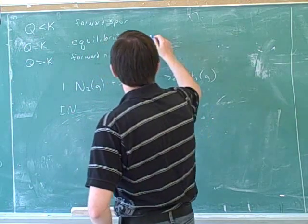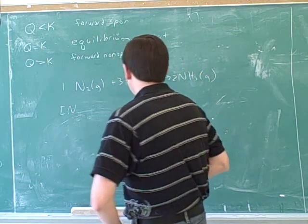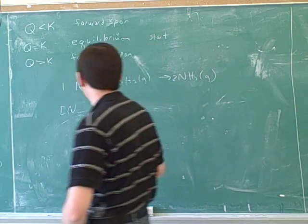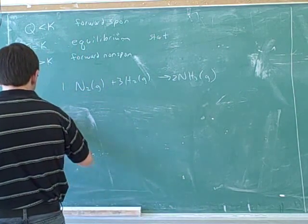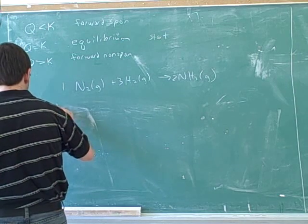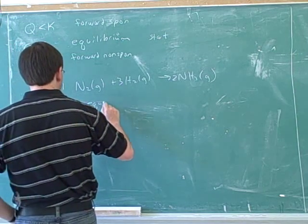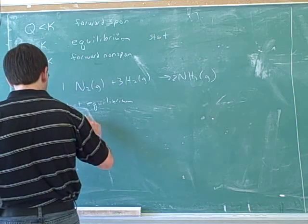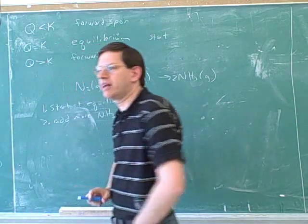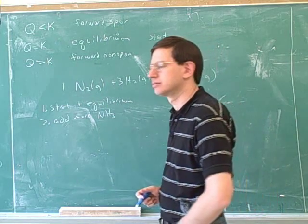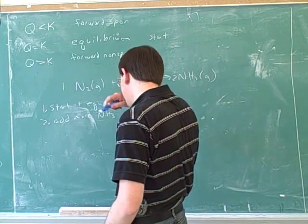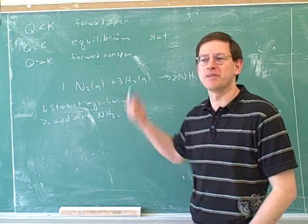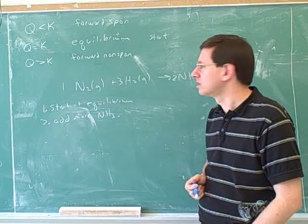So let's say that we start at equilibrium. And now we add more ammonia. If we add more ammonia, is that going to increase or decrease K? No effect. What's the effect is it going to have on Q? Increase.